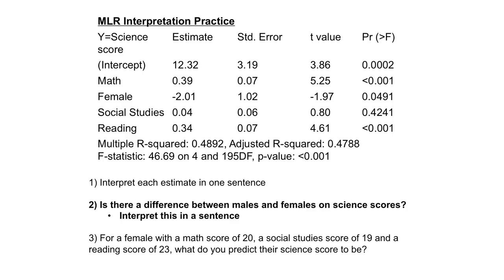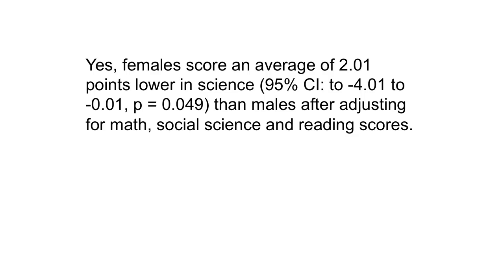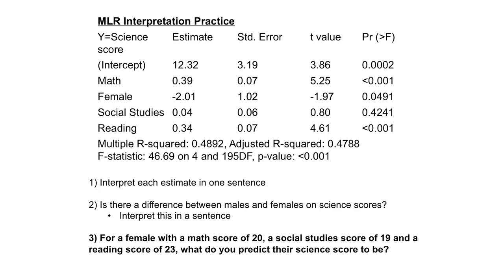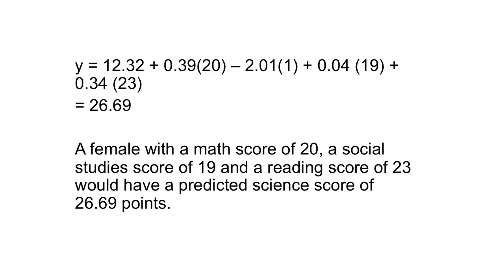Is there a difference between males and females on science scores? Yes — females score an average of 2 points lower in science than males after adjusting for math, social science, and reading scores. Since the p-value is less than 0.05 and our confidence interval does not include zero, we reject the null hypothesis that there's no difference. For a female with a math score of 20, a social studies score of 19, and a reading score of 23, we simply plug these values into our regression equation. A female with these scores would have a predicted science score of 26.69 points.